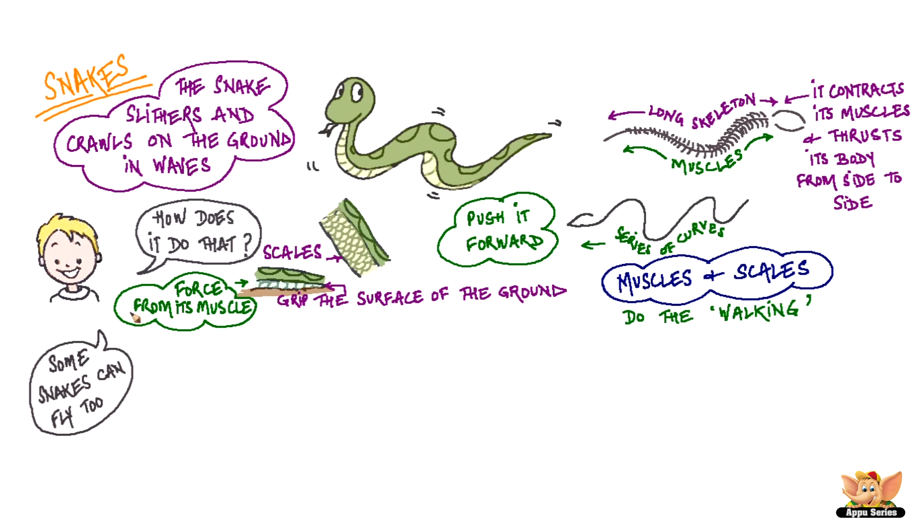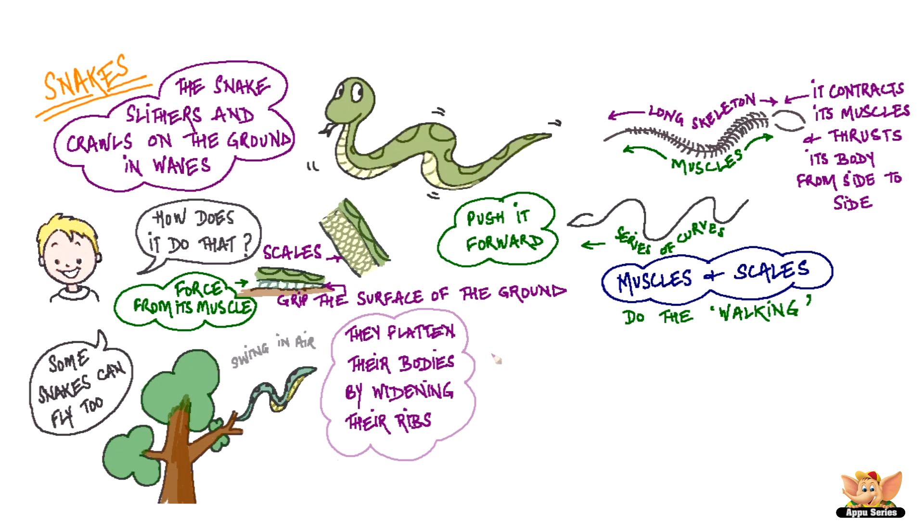Some snakes can fly too. Can you imagine how they do that? They swing themselves into the air from a high branch, then flatten their bodies by widening their many ribs. This helps them to glide for a long distance.